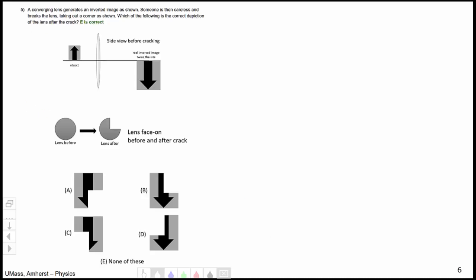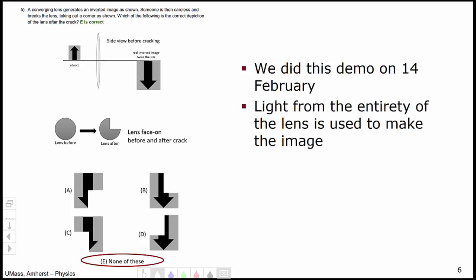Question number 5 dealt with the cracked lens. The correct answer was E, none of these. We did this particular demo in class essentially on the 14th of February, where instead of cracking the lens, I covered up part of it with a sheet of cardboard. And the key point from that demo was that all the light from the lens is used to make the image.